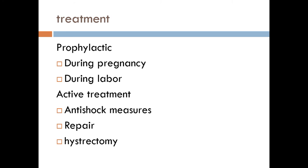Active treatment includes anti-shock measures with fluid replacement and blood transfusion, and immediate laparotomy. If there is a single tear and the patient is young and has not completed her family, repair of the tear with preservation of the uterus is performed. If the patient has completed her family and there are multiple tears, hysterectomy is performed, which is life-saving for the patient.